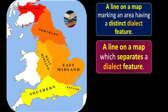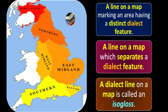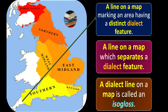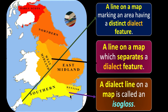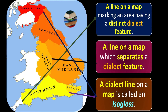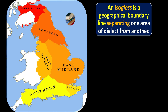A dialect line on a map is called an isogloss. You can see this dialect line separates west midland from east midland. Then another dialect line separates Kentish from southern dialect. Another line separates earlier Scots from northern dialect. So a dialect line on a map is called an isogloss.